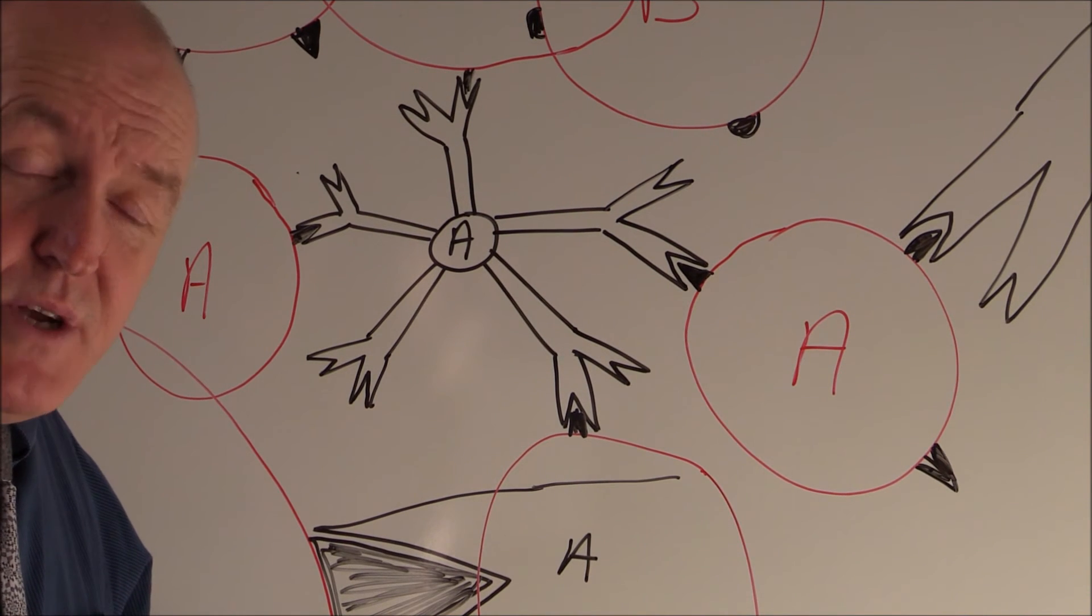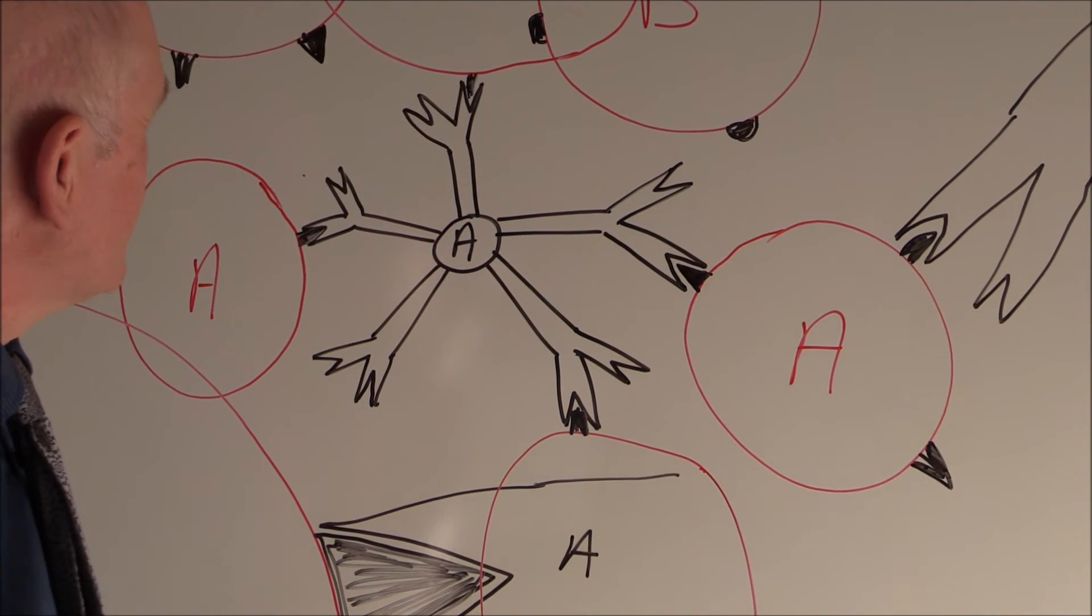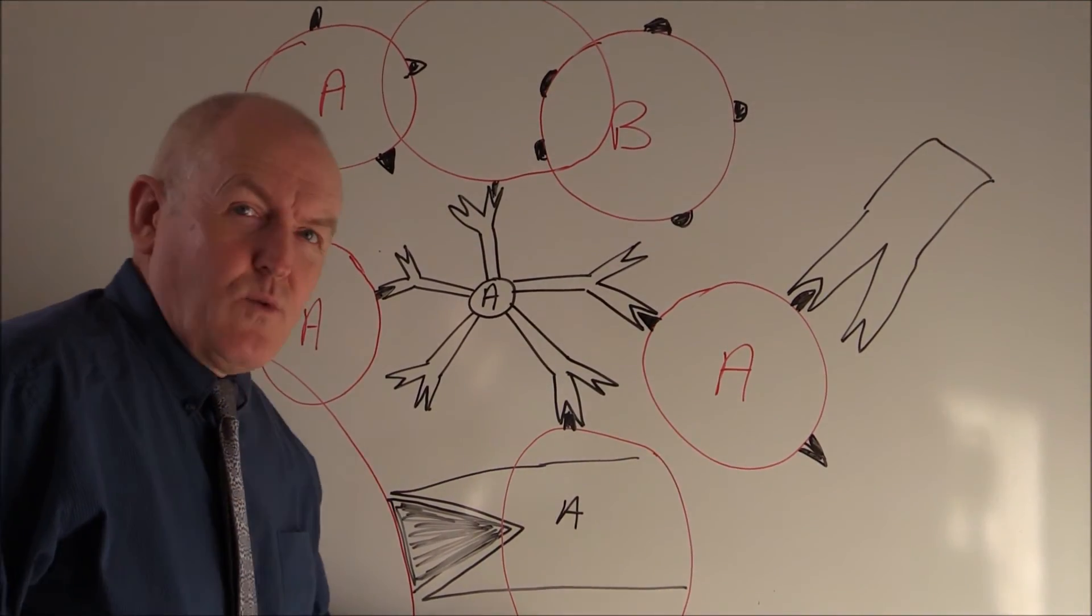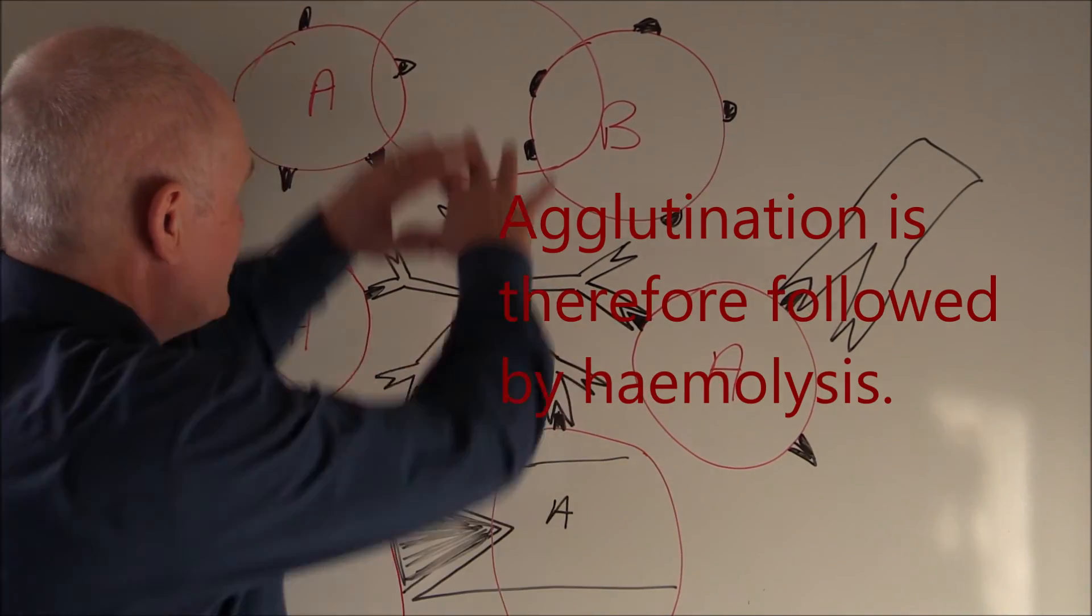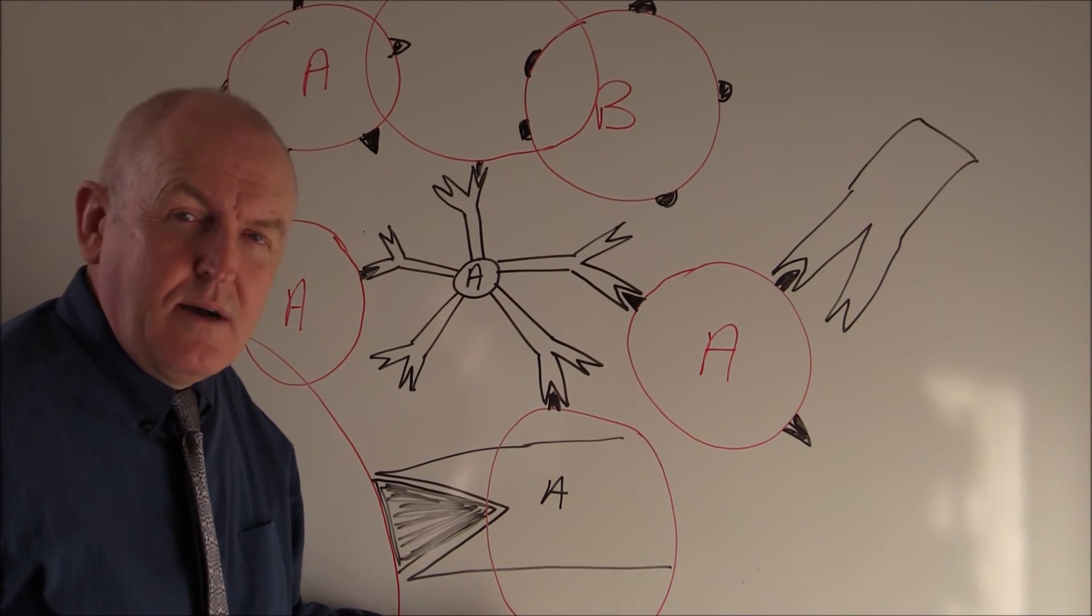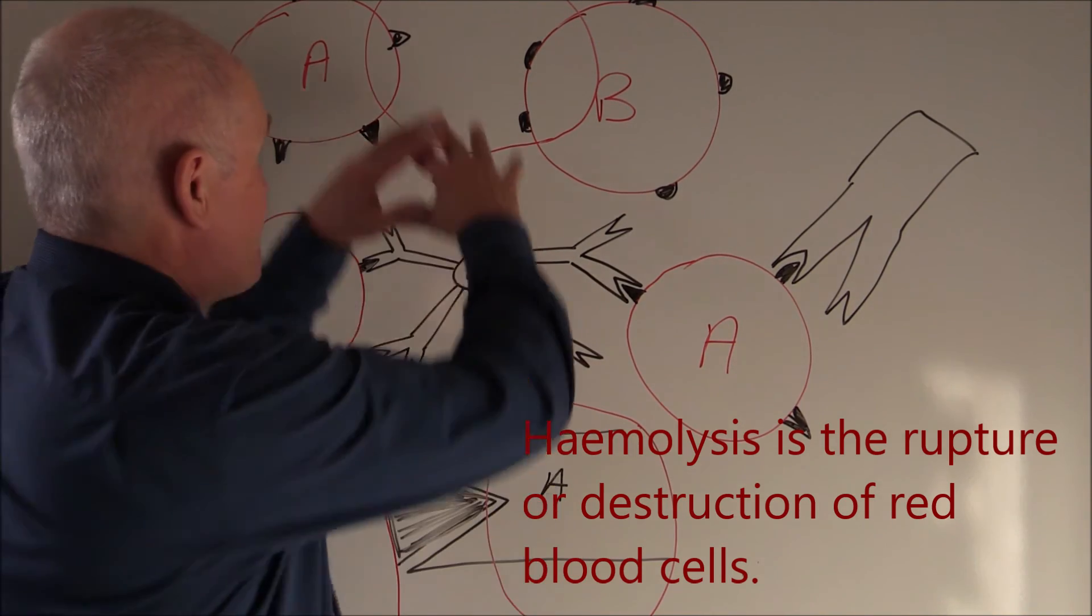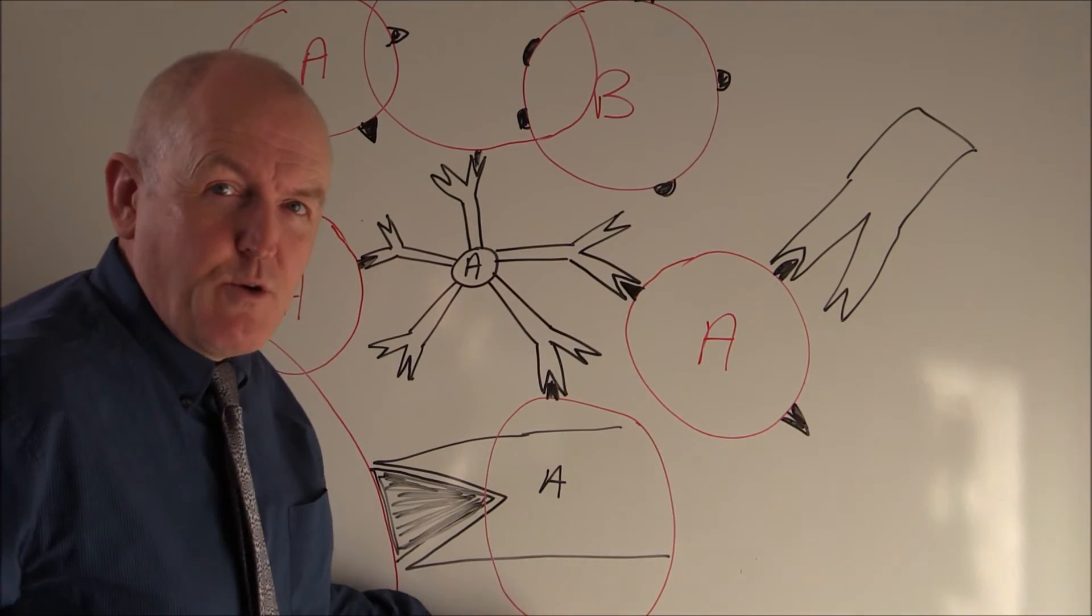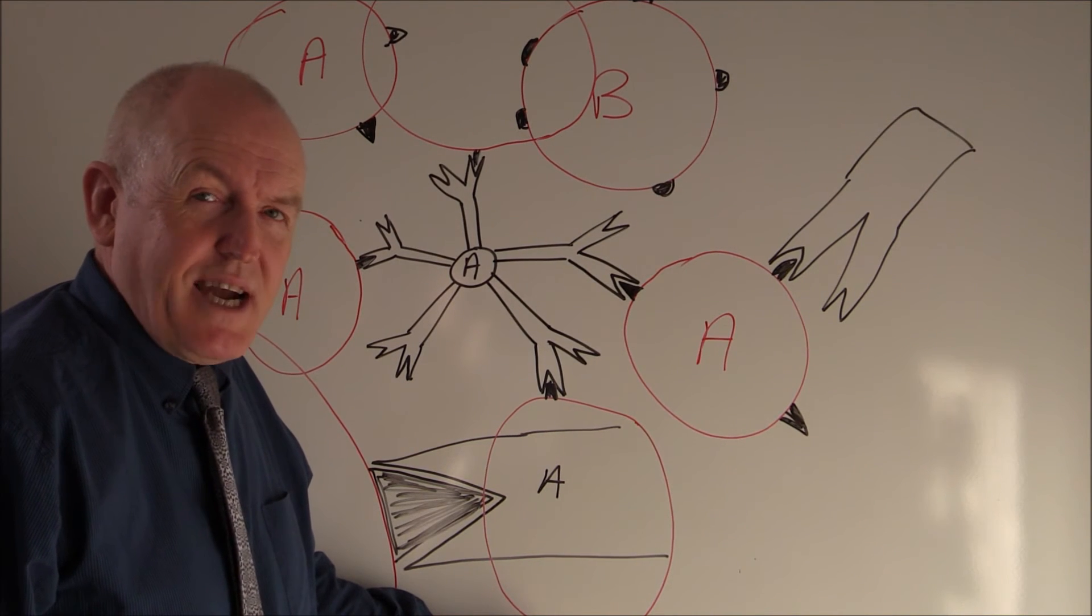This is going to stimulate immunological, sometimes complement-mediated reactions. This is going to break up these red cells, causing what we call a hemolytic reaction. So initially there's going to be the agglutination - they're all going to get clumped together - and then there's going to be hemolysis: hemo blood, lysis to break up, to break up the red cells. That can release free hemoglobin into the blood, causing a hemolytic mismatch reaction.